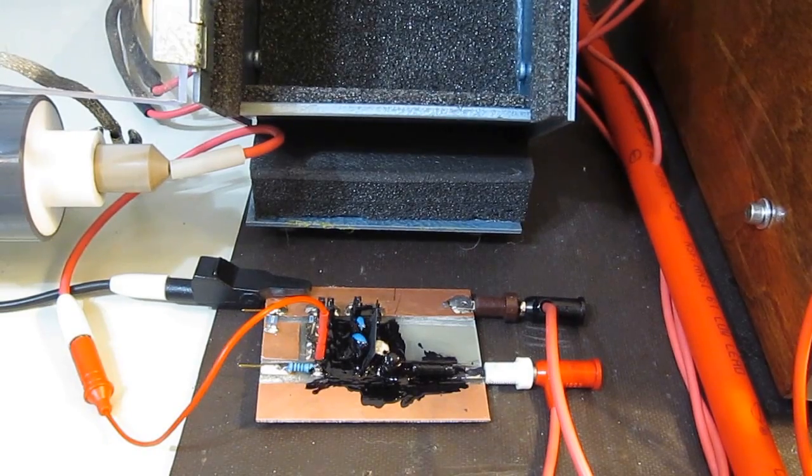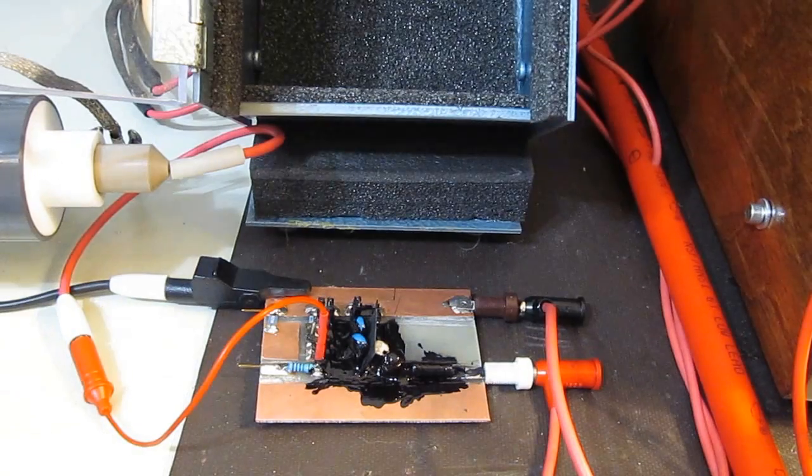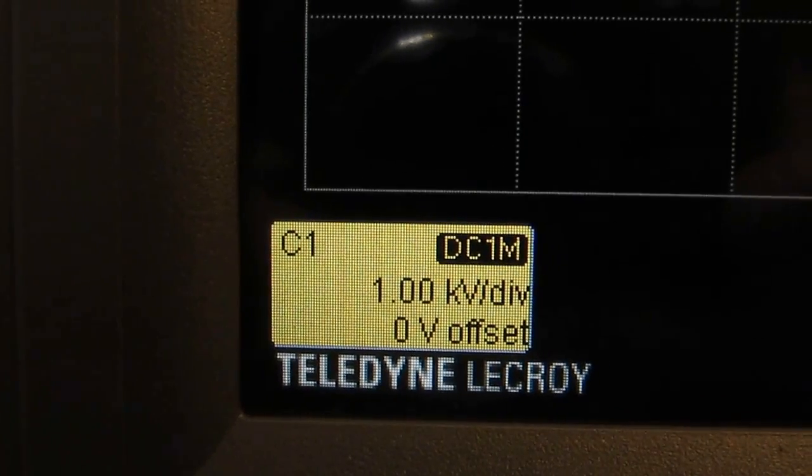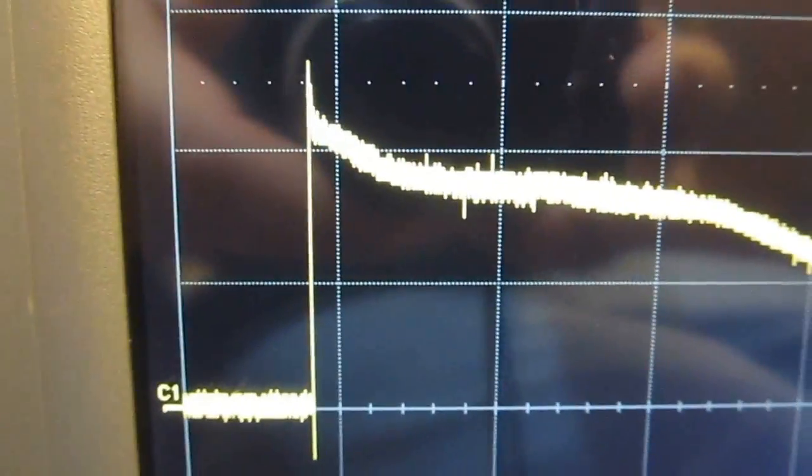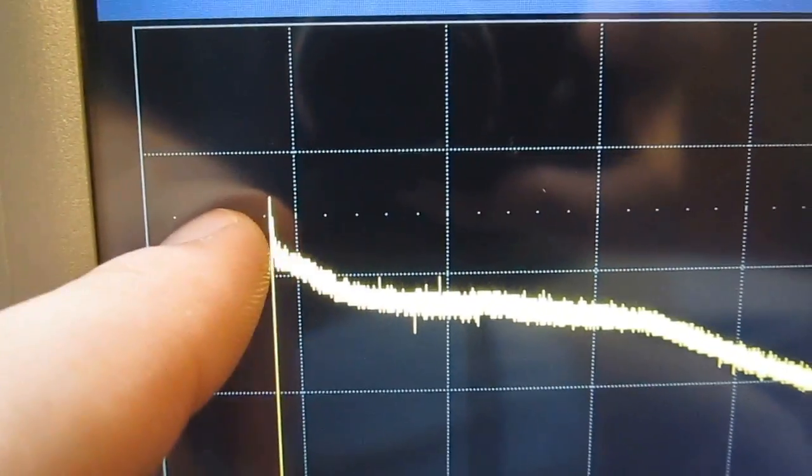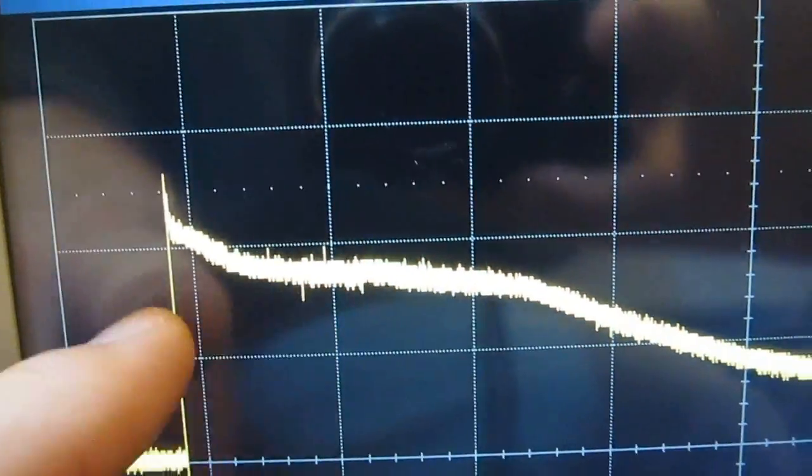Okay. We'll give it a single transient. The LaCroix is currently set for 1,000 volts per division and 50 microseconds per division. As you can see here it's clamping at roughly 2.6 kilovolts. And then it settles down pretty quick.